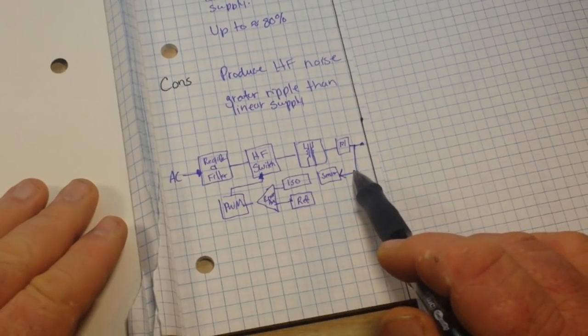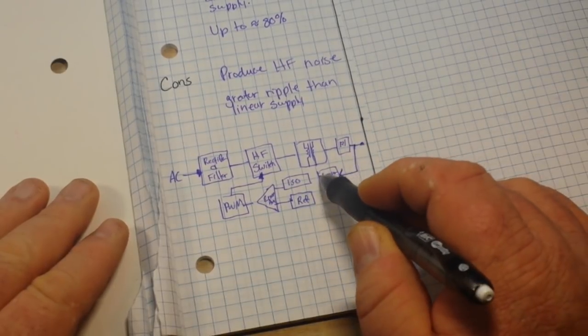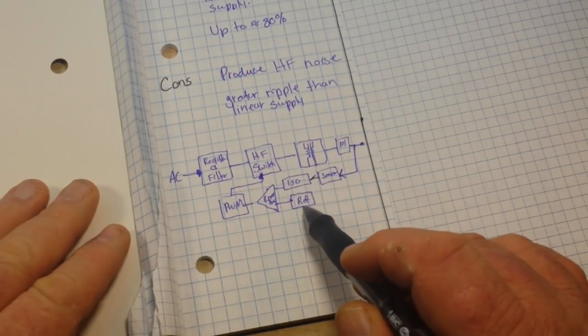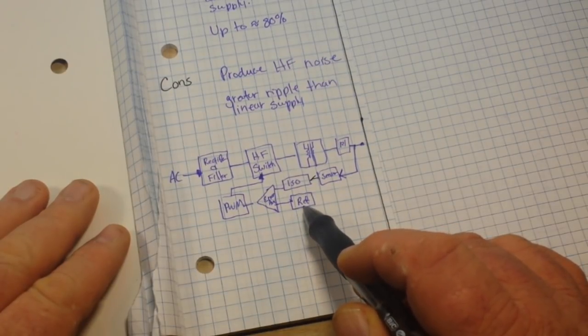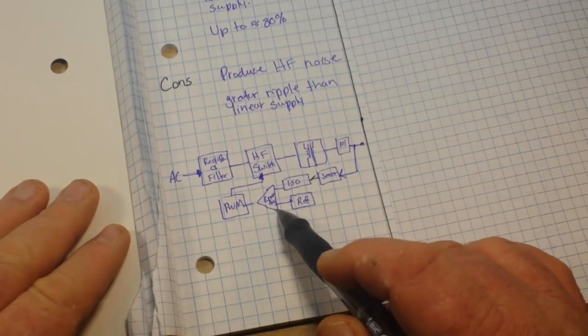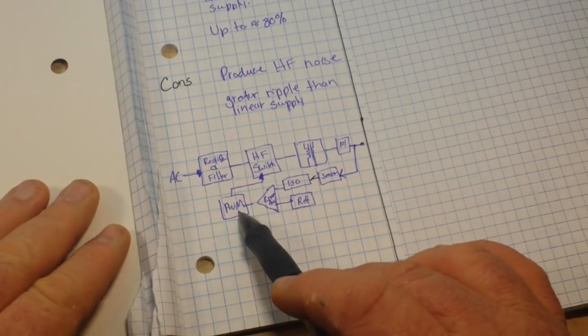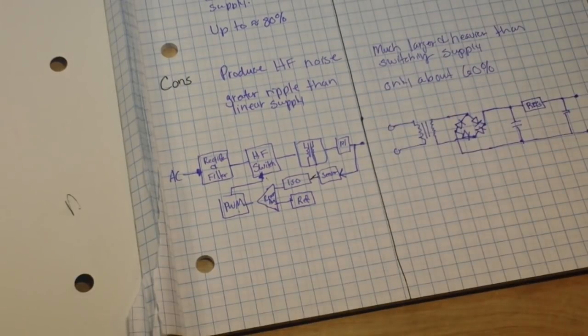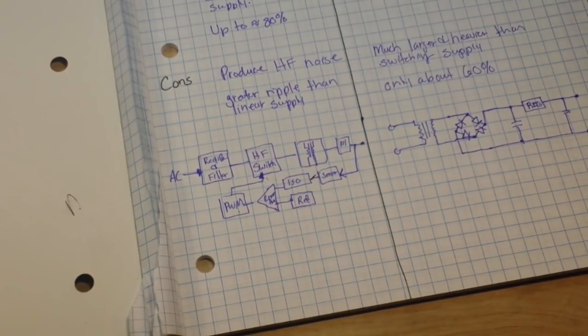But before you get to your output, it goes through a voltage sensor, then through some isolation, and it's put up against a reference voltage into an error amplifier to the PWM oscillator, which controls the high-frequency switch. So you see, it is incredibly more complicated.